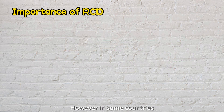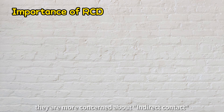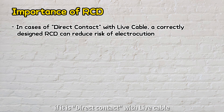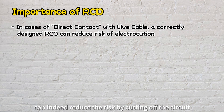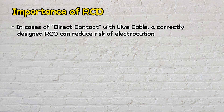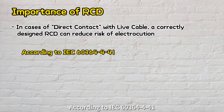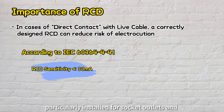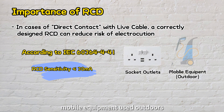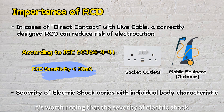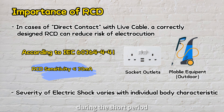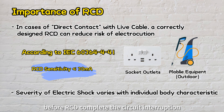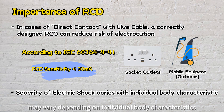However, in some countries, RCD is not considered compulsory as they are more concerned about indirect contact. If it is direct contact with a live cable, a correctly designed RCD can indeed reduce the risk by cutting off the circuit. According to IEC 60364-4-41, the sensitivity of the RCD should be 30 milliamps or lower, particularly for socket outlets and mobile equipment used outdoors. It's worth noting that the severity of electric shock during the short period before the RCD completes circuit interruption may vary depending on individual body characteristics.